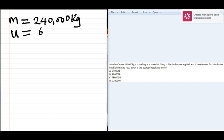The brakes are applied and it decelerates for 10 minutes. That's the time. Time is 10 minutes; we have to convert it to the SI unit. That is 10 times 60, which will give us 600 seconds.